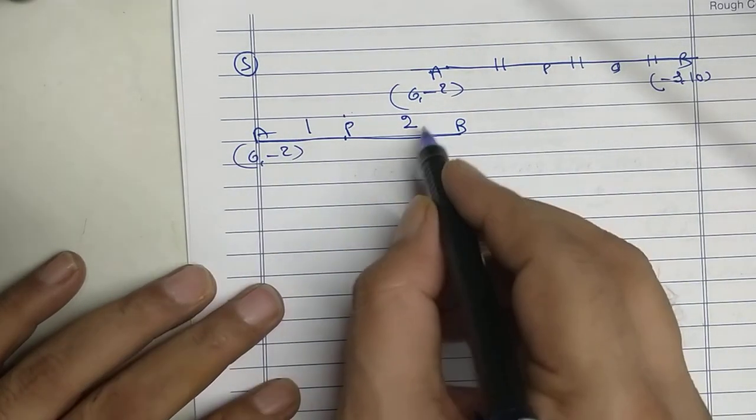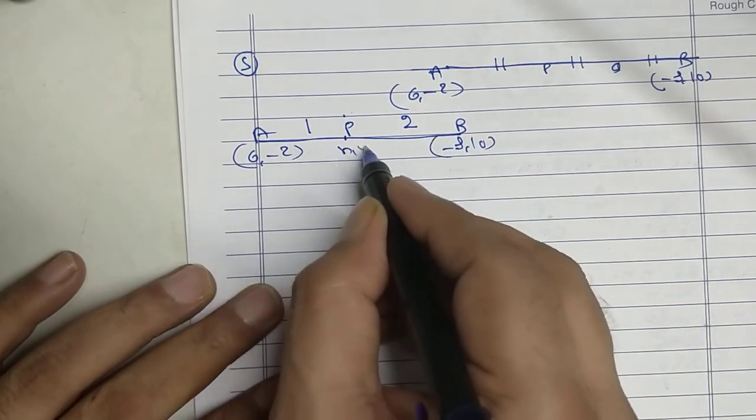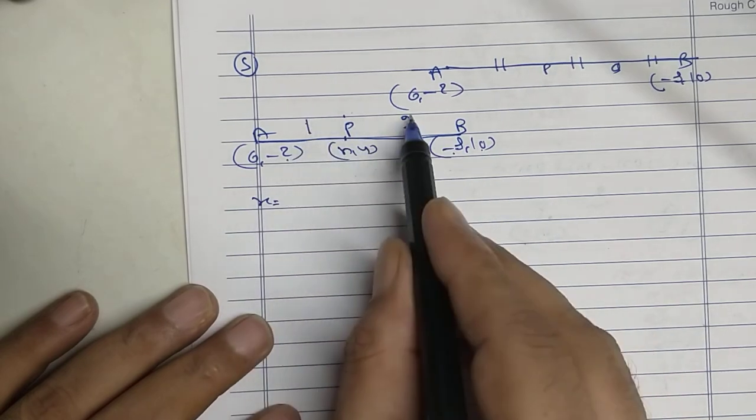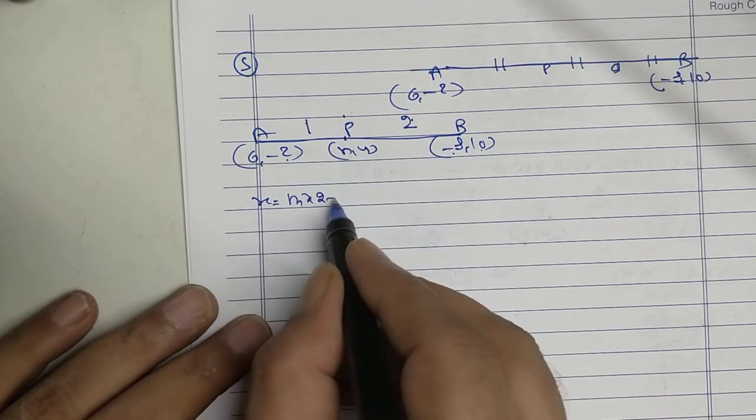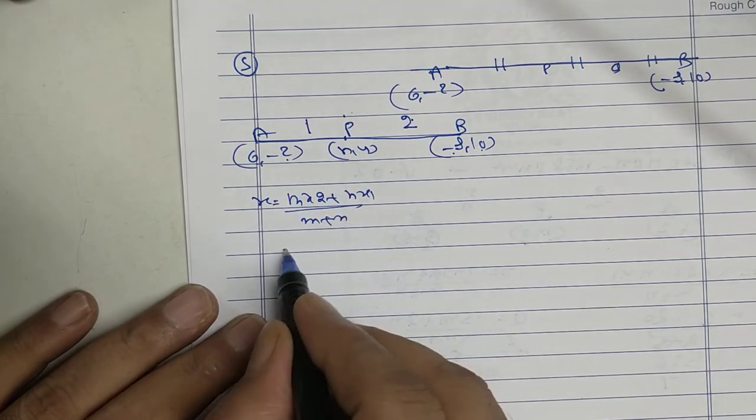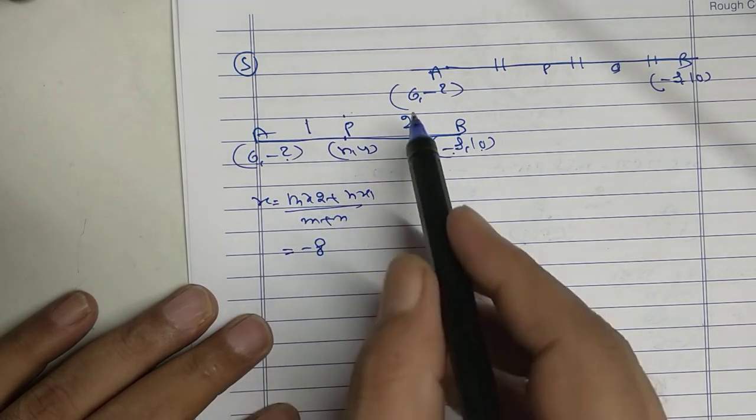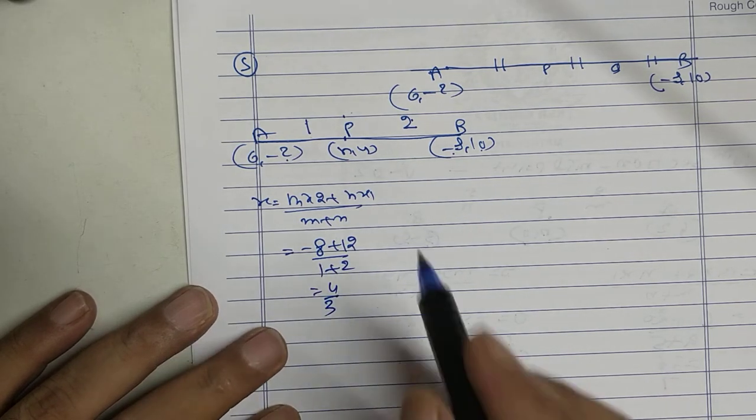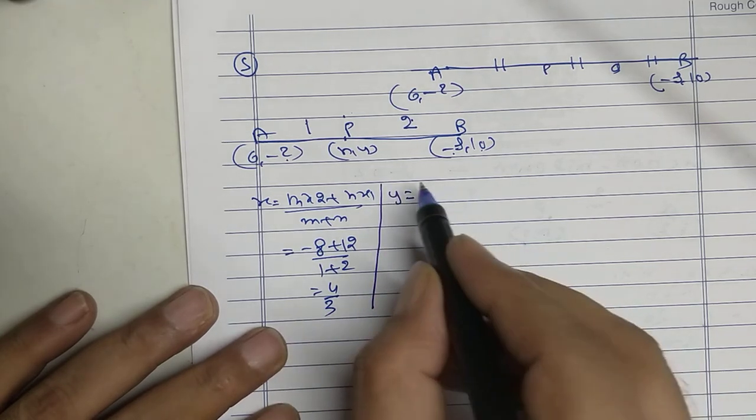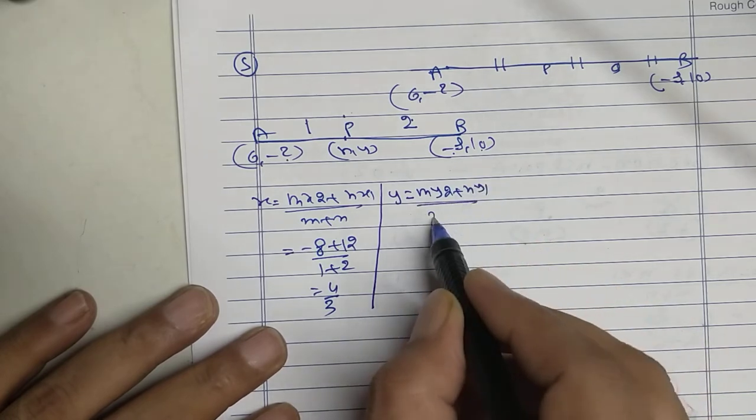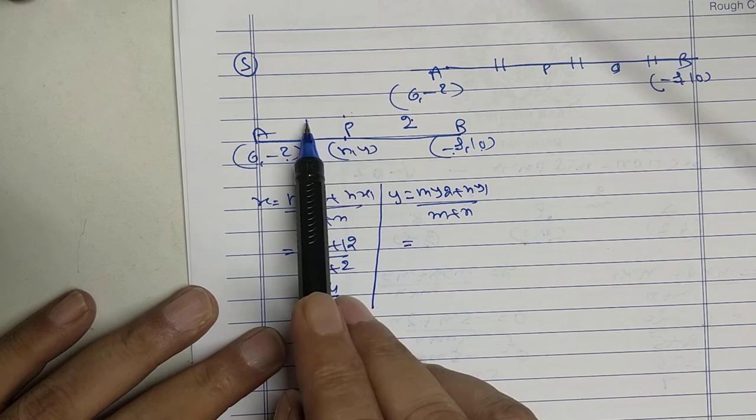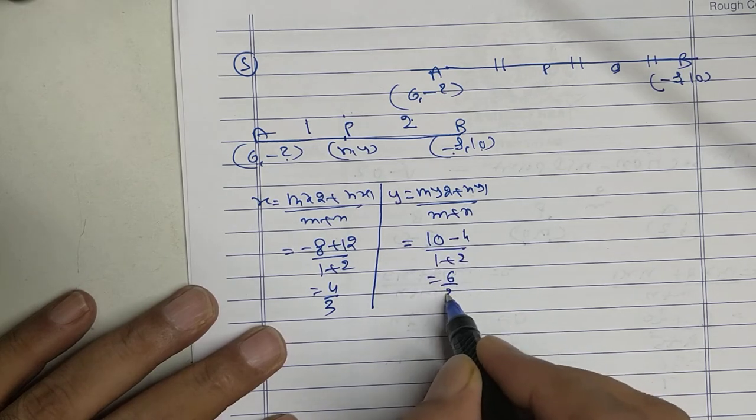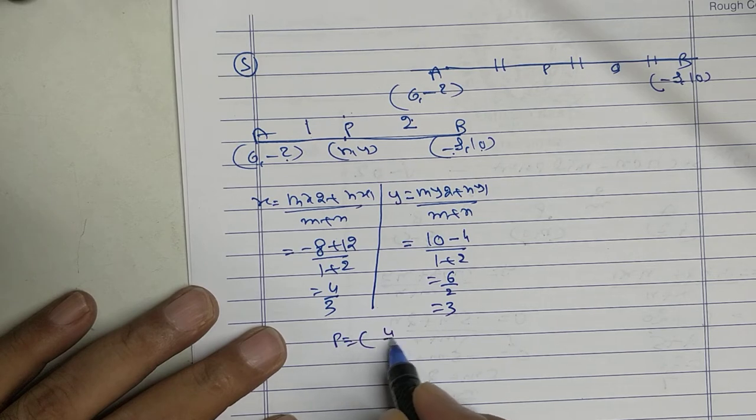6 and minus 2. Minus 8 and 10. X and y. Apply the formula. This is x1, y1, x2, y2, m, n. M x2 plus n x1, m plus n. 1 into minus 8. 2 into 6. Upon 1 plus 2. That is 4 by 3. Y equal to m y2 plus n y1, m plus n. 1 into 10, 10. Minus 4. Upon 1 plus 2. 6 upon 2. That is 3. I got the coordinates of P as 4 by 3 and 3.